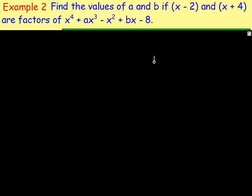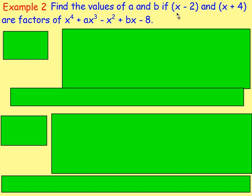Let's move on to example number 2. Find the values of a and b if x minus 2 and x plus 4 are factors of x to the power of 4 plus ax to the power of 3 minus x squared plus bx minus 8. This time we've got two unknowns — a and b. However, we do have two pieces of information: we're told that x minus 2 and x plus 4 are both factors. So let's deal with them one at a time.